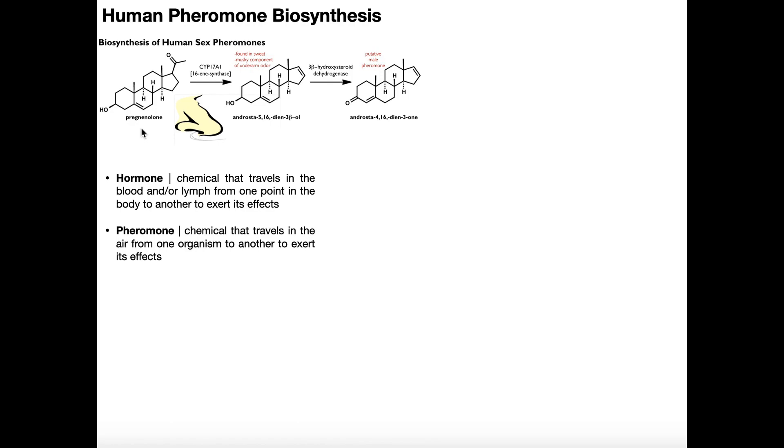And in this pathway, we're going to begin with pregnenolone. So pregnenolone is a direct metabolite of cholesterol. Cholesterol is the parent steroid. And cholesterol can have its long side chain, which is over here normally, cleaved off by an enzyme called cholesterol side chain cleavage enzyme.